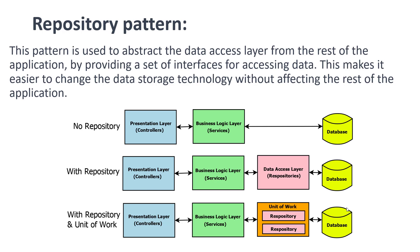Without the repository pattern, the presentation layer (controller) and business logic layer (services) directly access the database via DbContext. DbContext is itself a repository pattern. With the repository pattern, you have a clear separation: the presentation layer is the controller, the business logic layer is services, the data access layer is repositories, and then the database. The data access layer uses ApplicationDbContext (if using EF), and services use the repositories.